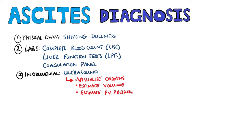Ultrasound is also used to estimate the volume of ascites and the pressure in the portal vein. Remember that in some cases, with a very small amount of ascitic fluid, it may only become apparent when an ultrasound is performed. Of course, paracentesis and the serum ascites albumin gradient, as we already mentioned, are also options.